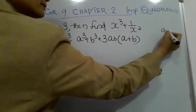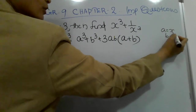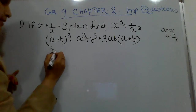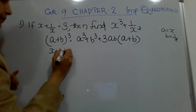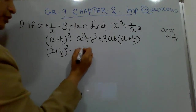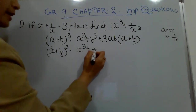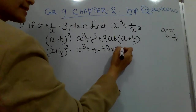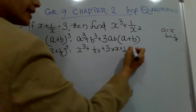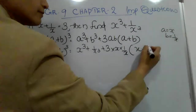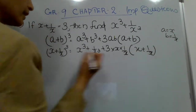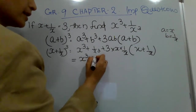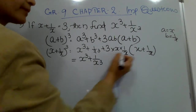Here, a is x and b is 1/x. Substituting these values, you will get: (x + 1/x)³ = x³ + 1/x³ + 3 × x × (1/x) × (x + 1/x).